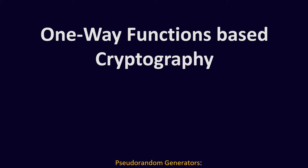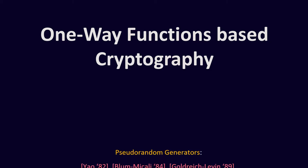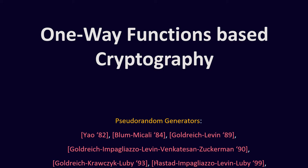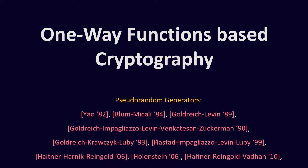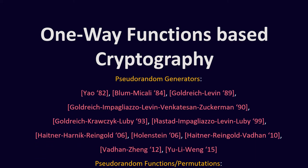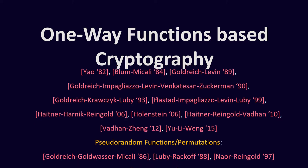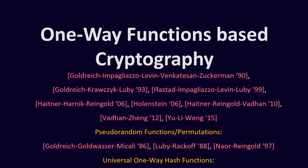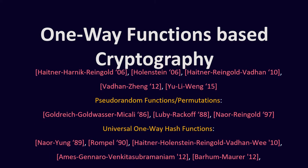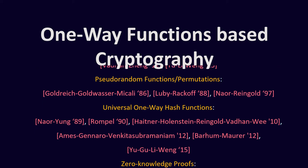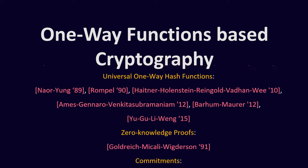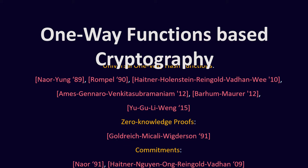One-way functions are the minimal assumption for complexity-based cryptography. We can use one-way functions in order to construct many useful primitives, including pseudorandom generators, pseudorandom functions, encryptions, zero-knowledge proofs, universal one-way hash functions, and more. Yet the efficiency of these constructions does not allow us to implement them in practice.